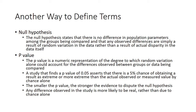Another way to define this: the null hypothesis states there's no difference in population parameters amongst the groups being compared. Any observed differences are simply a result of random variation in the data rather than an actual disparity. For instance, in the antihypertensive example with two groups of hypertensive patients — 50 getting placebo and 50 getting the new drug — I would say there should be no difference between those groups after giving the medication, and any differences that exist are purely due to chance alone, nothing to do with the actual drug.